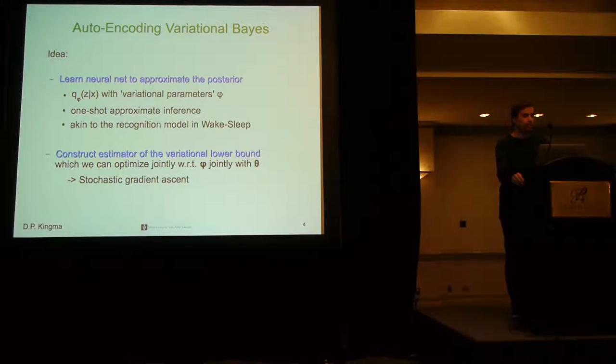The idea of our paper is as follows. We learn a neural net to approximate the posterior distribution of the latent variables. We will denote this approximate inference network with Q. Q maps from our observed variables to a distribution over Z, our latent variables, and this is parameterized by phi, the parameters of this inference network. After learning this network, we can then perform a one-shot approximate inference of the latent variables. This is a bit akin to the recognition model in wake-sleep.